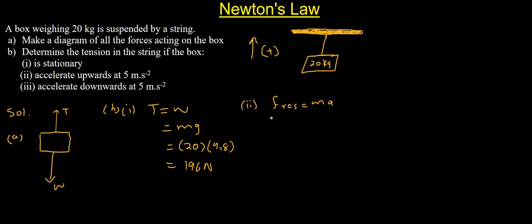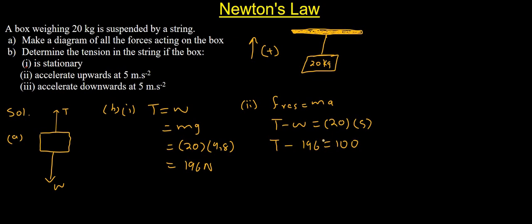We have two forces: tension and weight. So our resultant force equation is: tension minus weight equals mass multiplied by acceleration. That gives us T minus 196 equals 20 multiplied by 5. 20 multiplied by 5 is 100. So when we solve for tension, we transpose 196 to the right hand side: tension equals 100 plus 196. Therefore tension equals 296 newtons upwards.